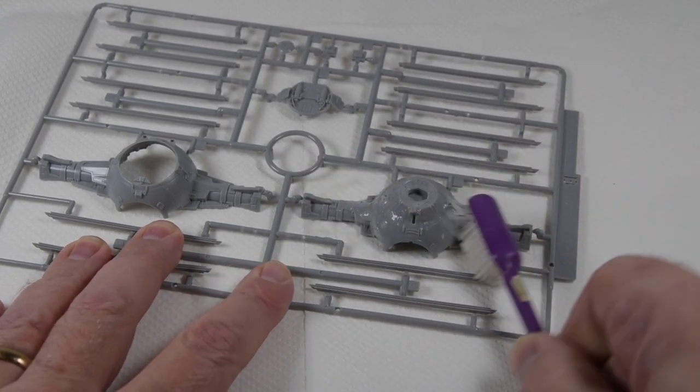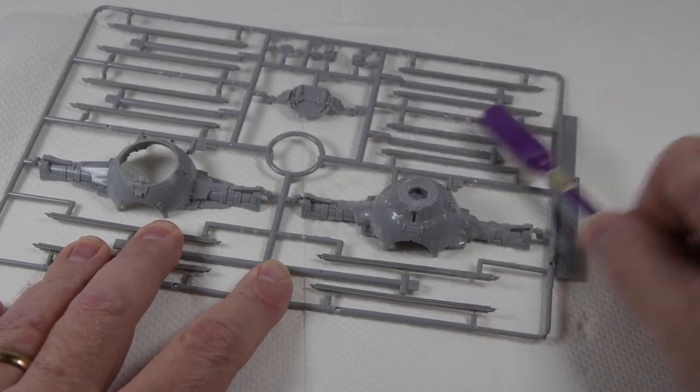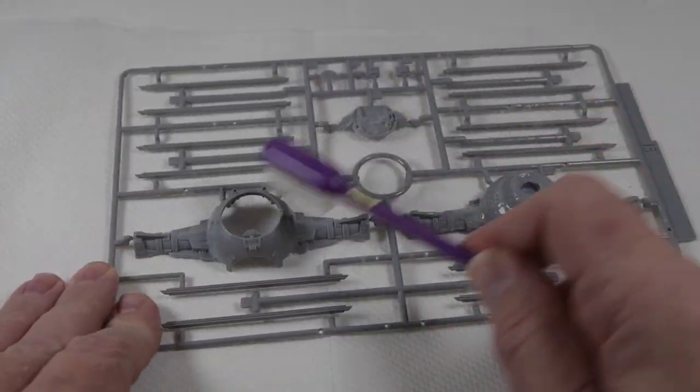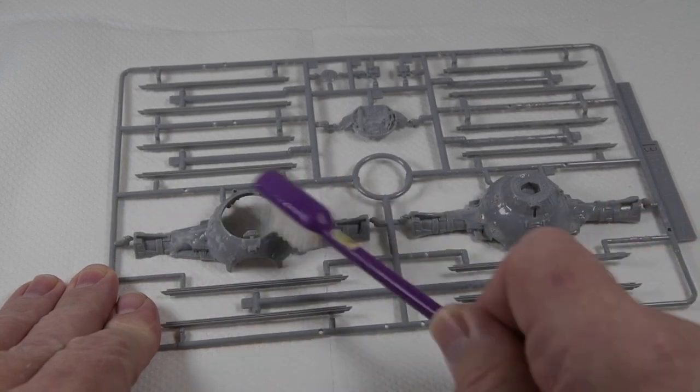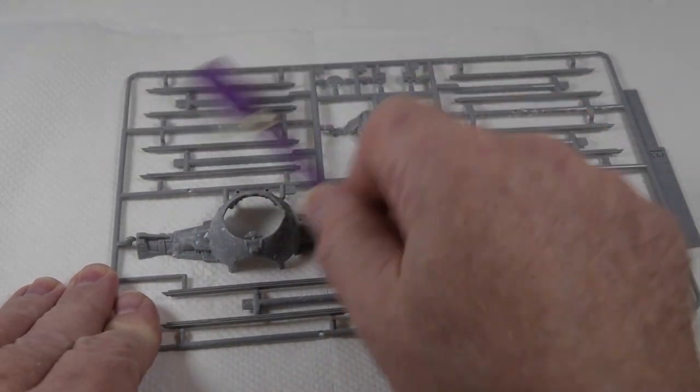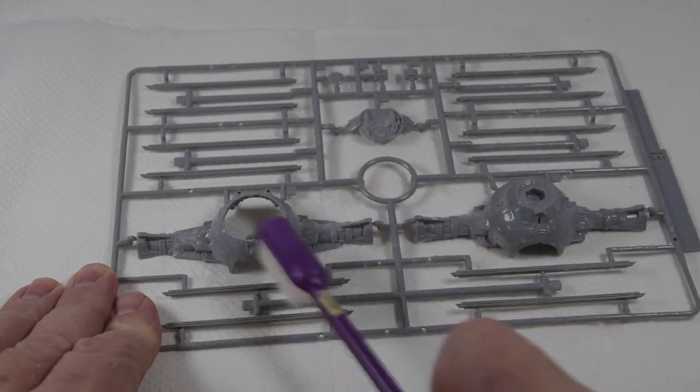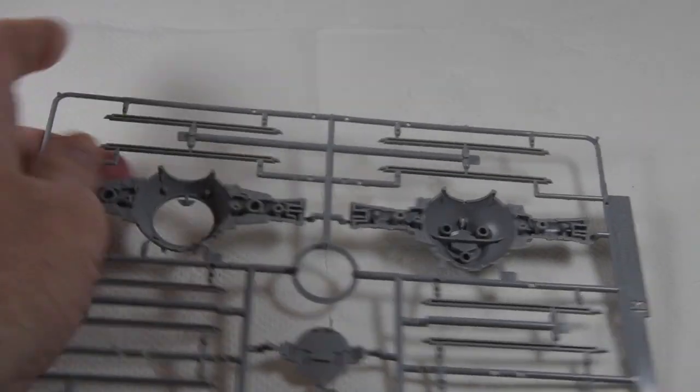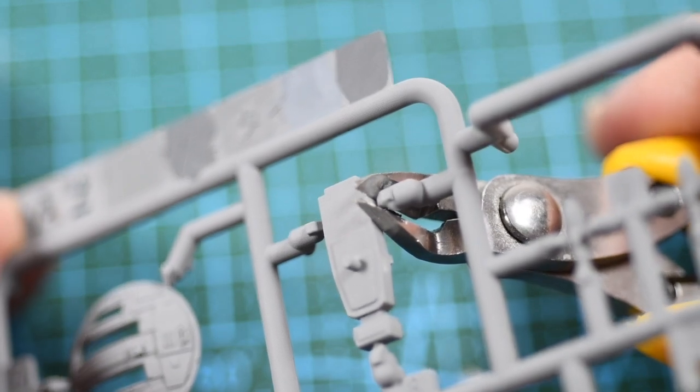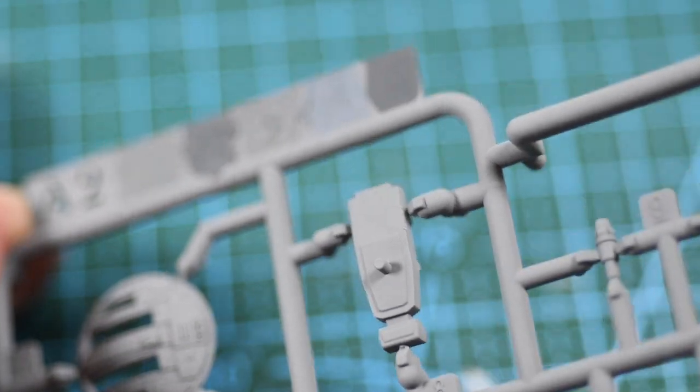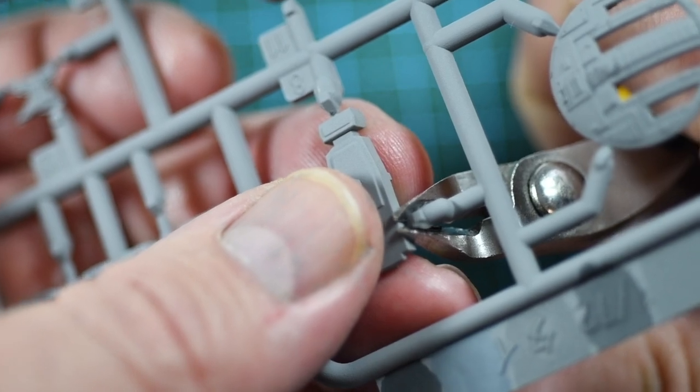The first thing we need to do, as always, is to give the parts a gentle clean in a mild detergent, say a few drops of washing-up liquid in a cup of water. This cleans any oil residue left over from the molding process. Even if you're not painting the kit, this will help decals and stickers adhere to the plastic better. If you are painting the kit, then when it's dry give it a gentle coat of primer. When cutting the parts from the sprue, I use these modeling nippers, but any sharp and narrow pointed cutters will do. Try to cut as close as you can to the part.